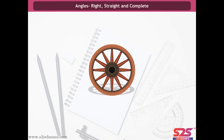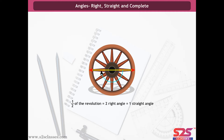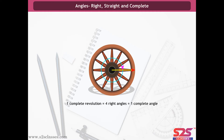Consider a wheel with 12 strokes. One fourth of the revolution makes a right angle. One half of the revolution — that is, two right angles — makes a straight angle. Three fourths of the revolution equals three right angles. And one complete revolution equals four right angles, which is equal to one complete angle.